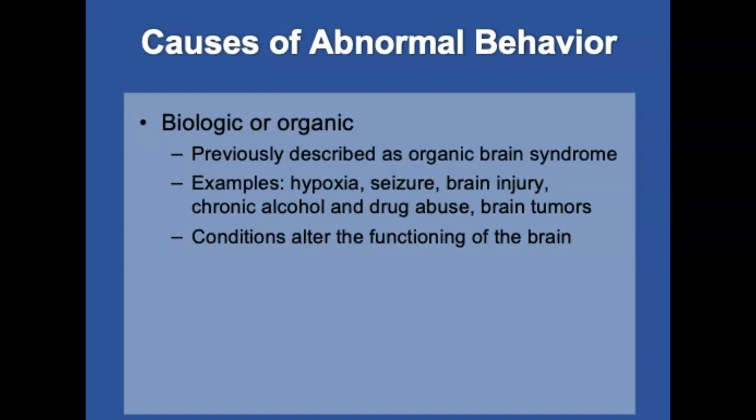Many patients who present with psychiatric symptoms are affected by biologic or organic factors that interfere with normal cerebral function — previously described as organic brain syndrome. Examples of biologic or organic causes include chronic hypoxia, seizure, traumatic brain injury, chronic alcohol or drug abuse, or brain tumors. These conditions alter normal brain function and may cause derangements in behavior. The most common offenders are alcohol and drugs, dementia, and delirium.